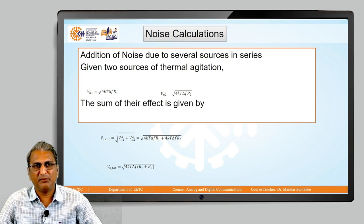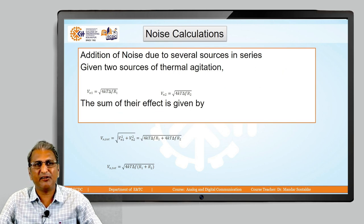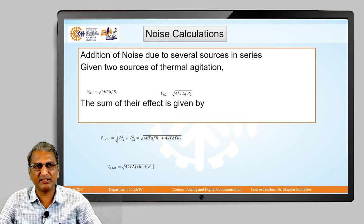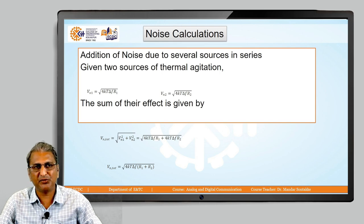Now, there are some equations we can call noise calculations. If there are two voltage sources in series, how do we calculate total noise voltage? We know the formula Vn is square root of 4kTΔfr.